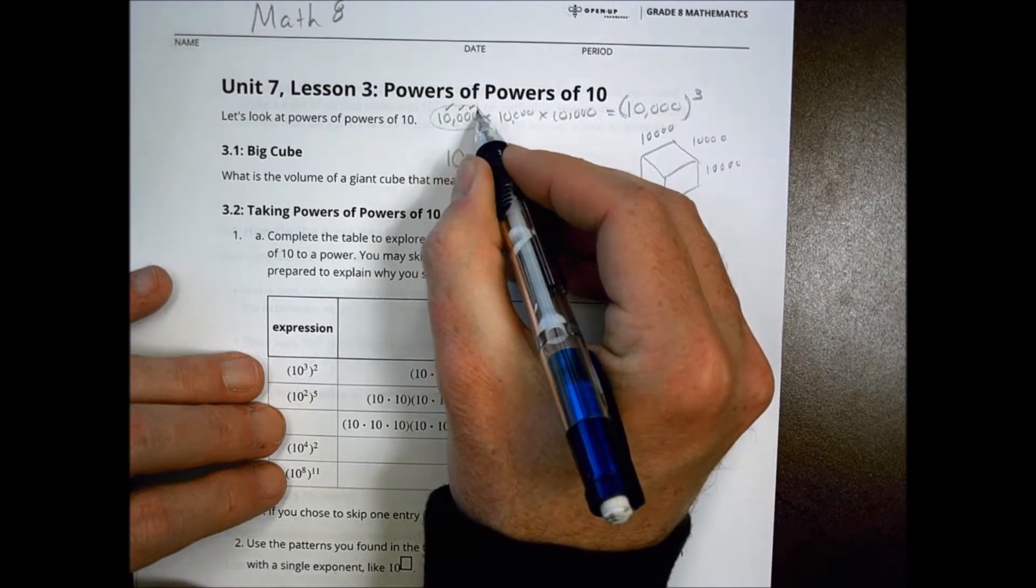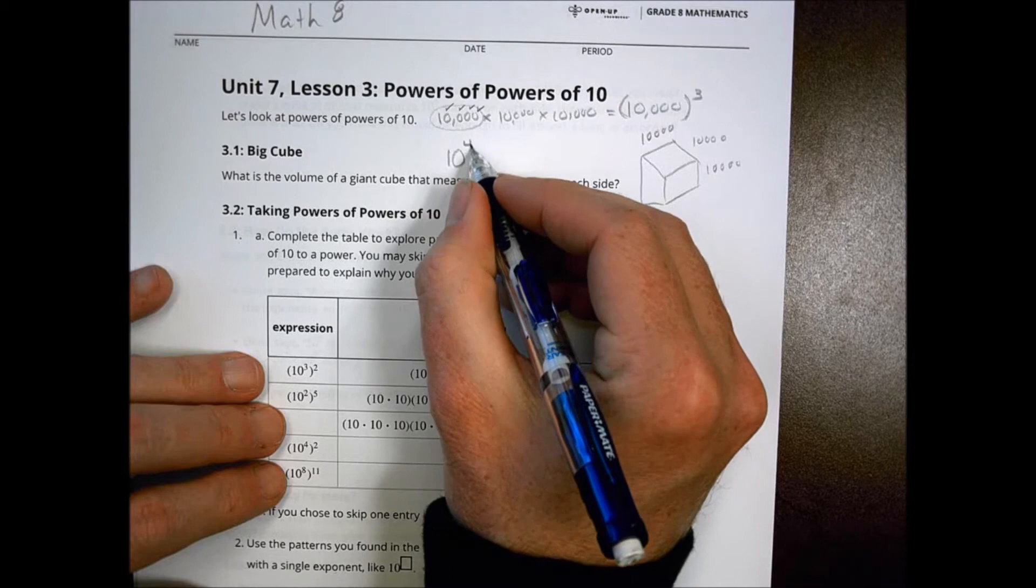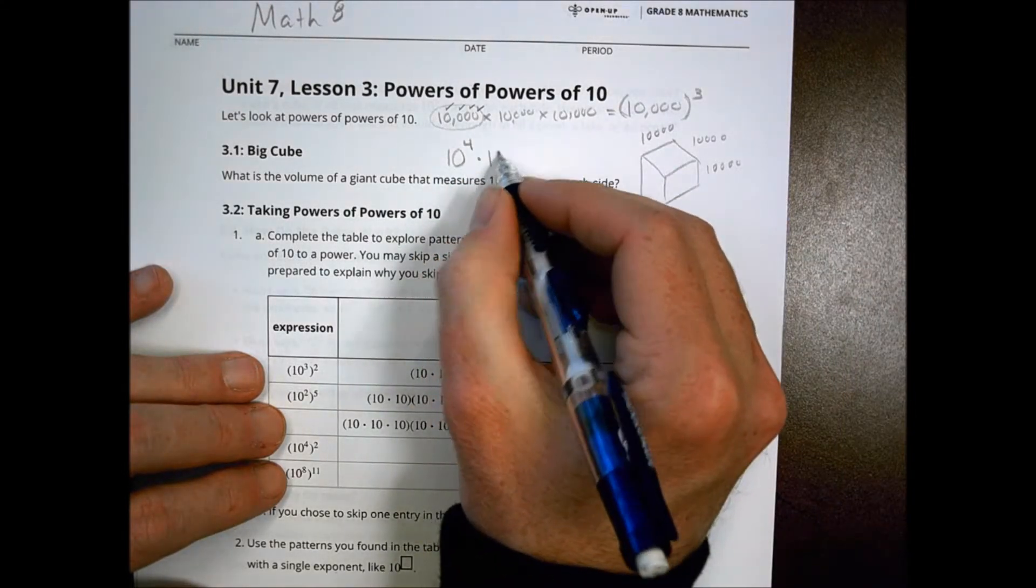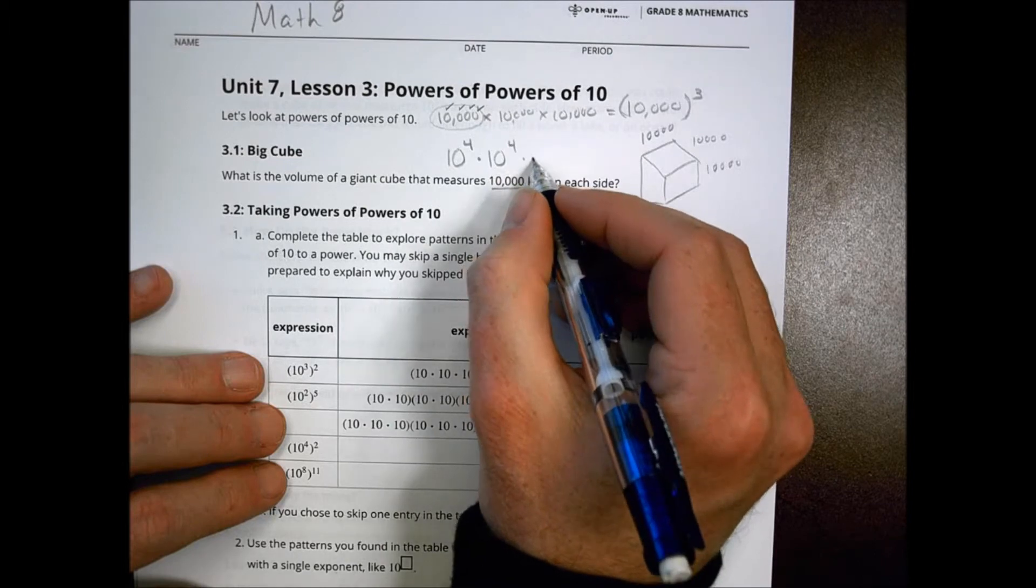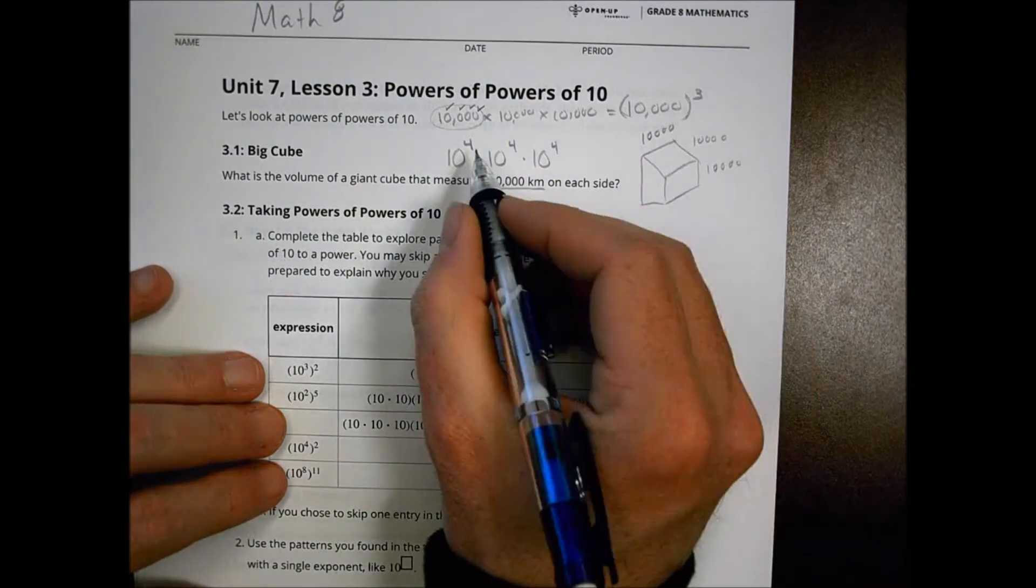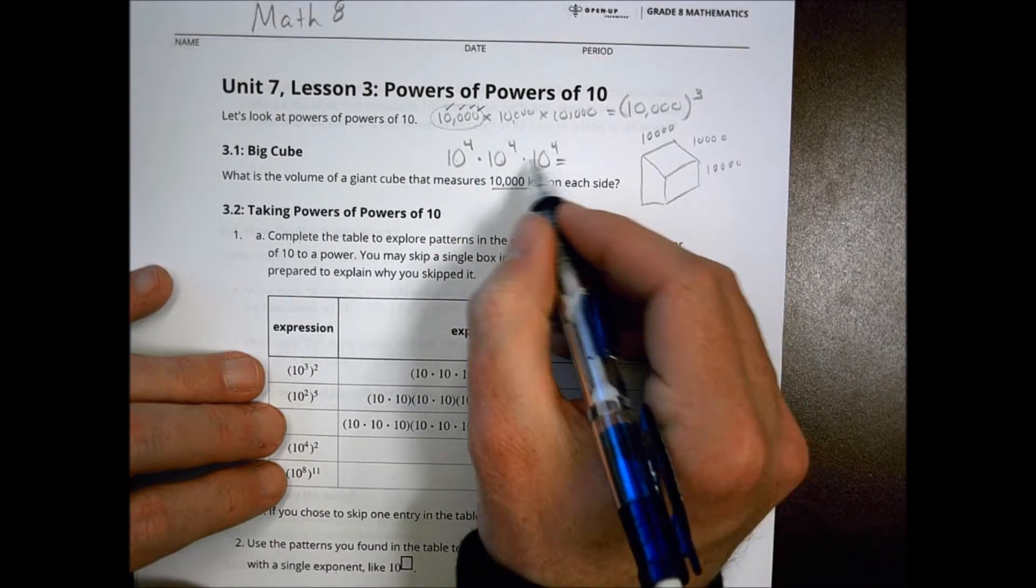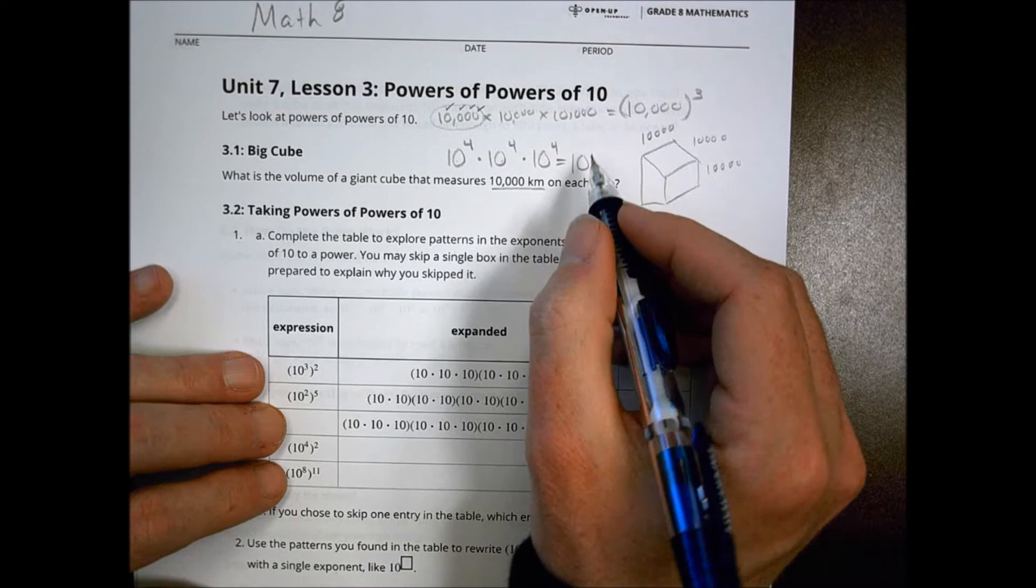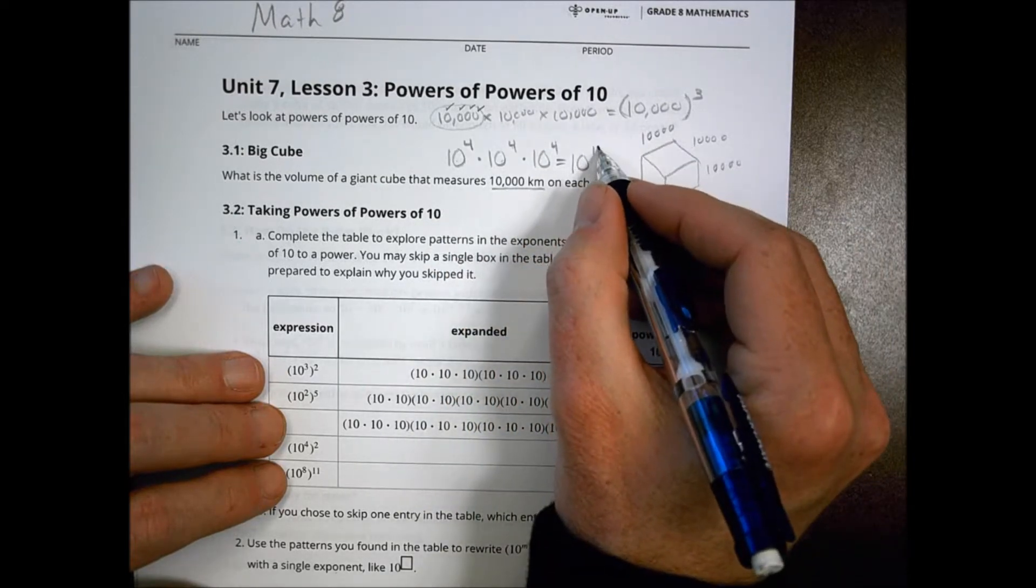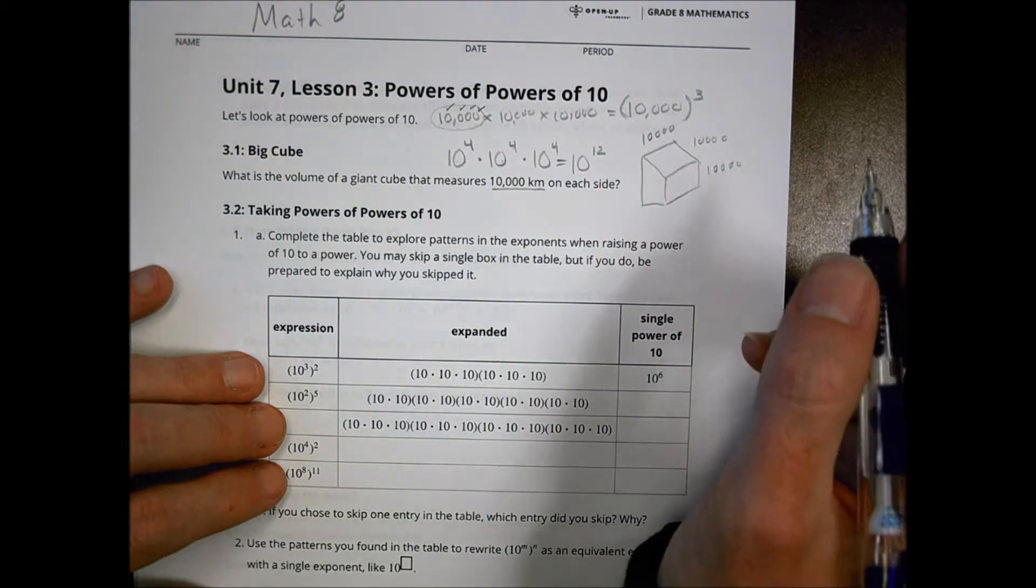One, two, three, four. So we could say that 10,000 is the same as 10 to the fourth. So what I have here is 10 to the fourth times 10 to the fourth times 10 to the fourth. Because they're all the same base, I can add those up: four plus four plus four, which is the same as 12. So I ended up with 10 to the 12th power.